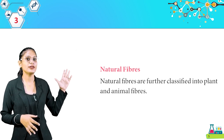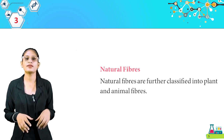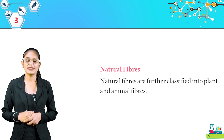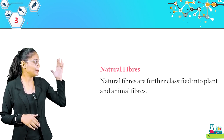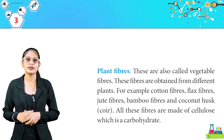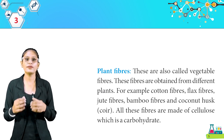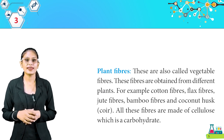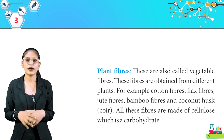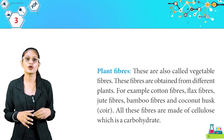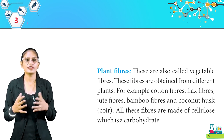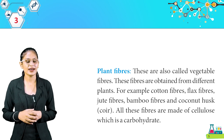Natural fibers are further classified into plant fibers and animal fibers. Plant fibers, also called vegetable fibers, are obtained from different plants. For example, cotton fibers, flax fibers, jute fibers, bamboo fibers, and coconut husk coir. All these fibers are made of cellulose, which is a carbohydrate.